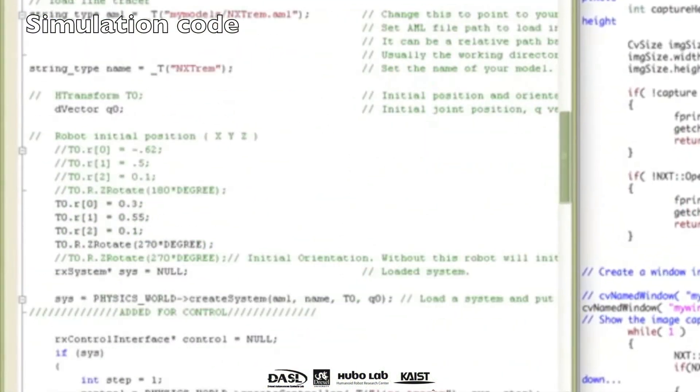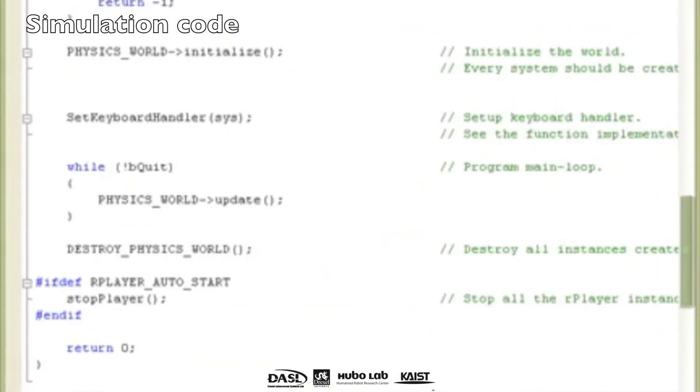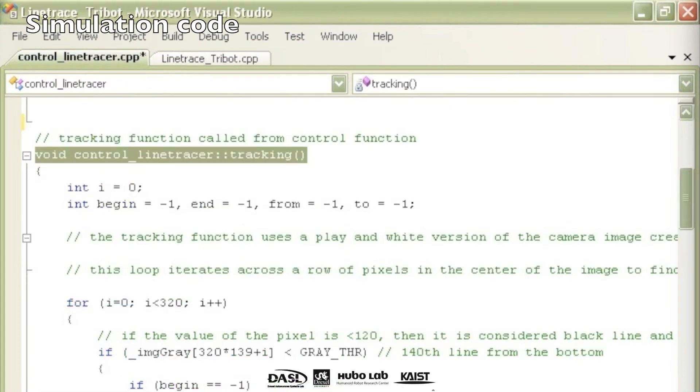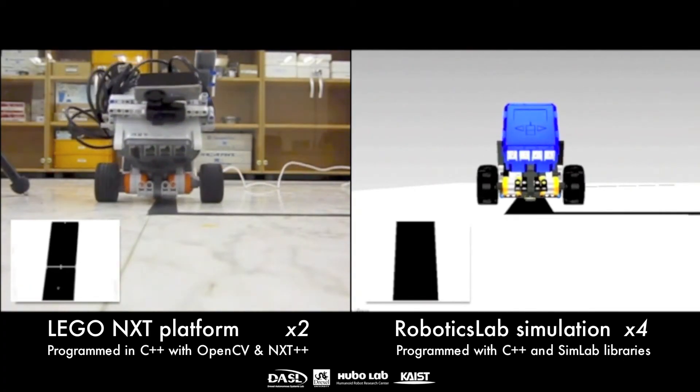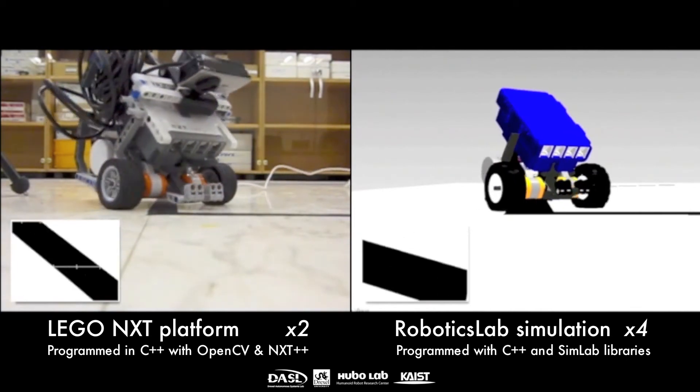The code written in Visual Studio is mostly for the simulation. There is an inaccessible control loop which calls the functions for camera querying, line tracking, and motor command. Because of this structure, a new control loop had to be written for the NXT to perform these tasks.